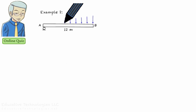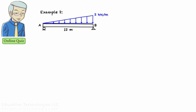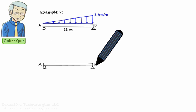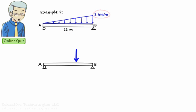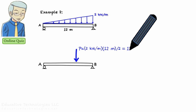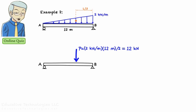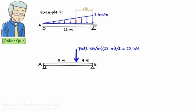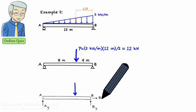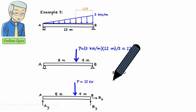Example 2: This beam is subjected to a triangular distributed load. Determine the support reactions. The magnitude of the equivalent concentrated load equals the area of the triangle: base of 12 times height of 2 divided by 2, giving P = 12 kN. The equivalent concentrated load is placed at the geometric center of the triangle, located at one-third of the base from the right angle — that is, 4 meters away from point B. The support reactions are found by writing and solving the equilibrium equations using the free body diagram.